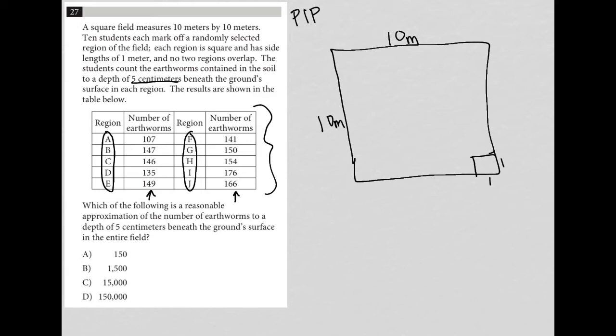So the actual question says, which of the following is a reasonable approximation of the number of earthworms to a depth of five centimeters beneath the ground surface in the entire field.